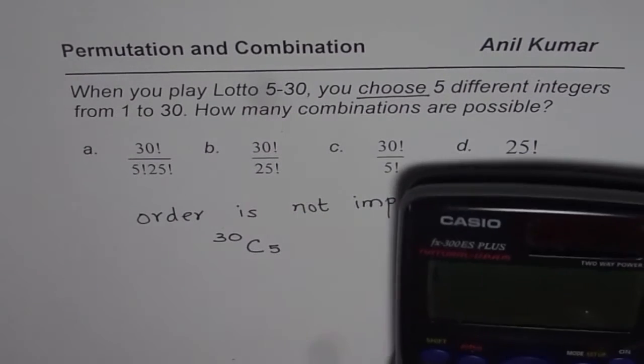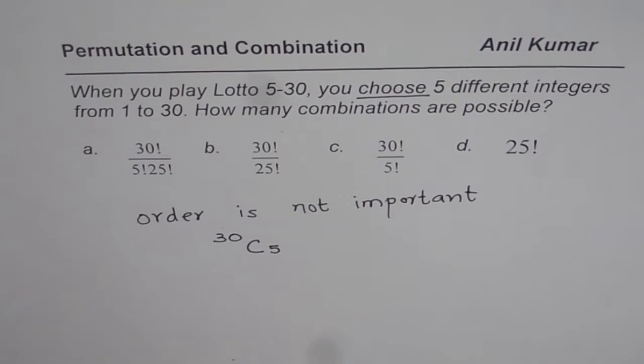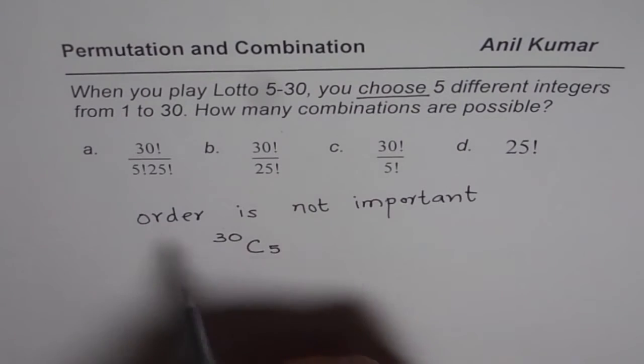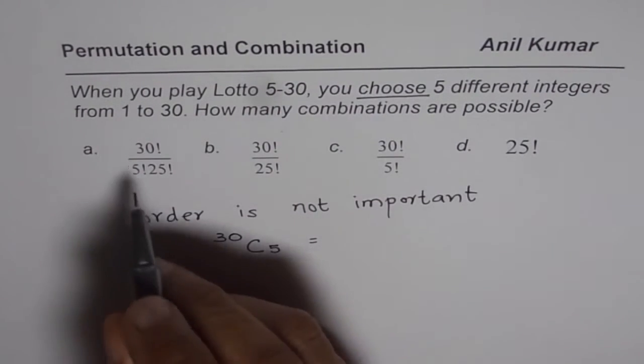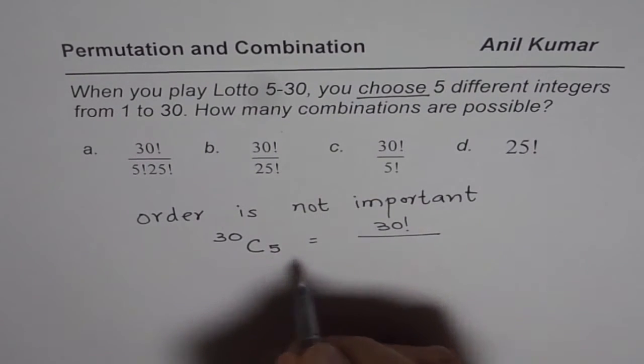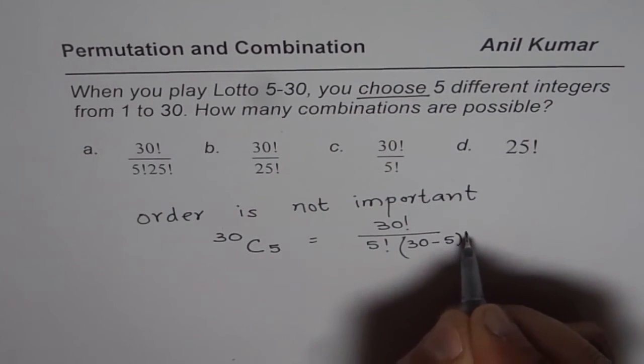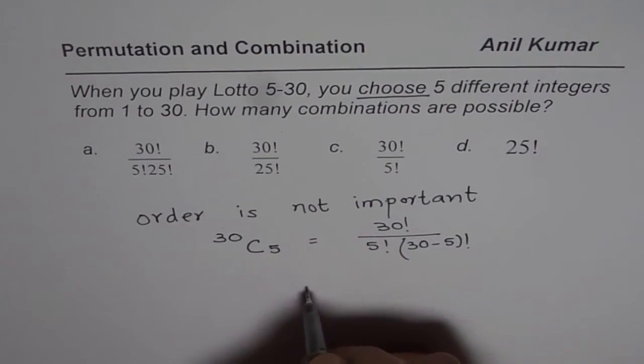You can always use a calculator to find the answer. It is 30C5 equals to 142,506. Well, the answer is given in the factored form, so you should write in factored form which is 30 factorial divided by 5 factorial times 30 minus 5 factorial, which is 25 factorial.